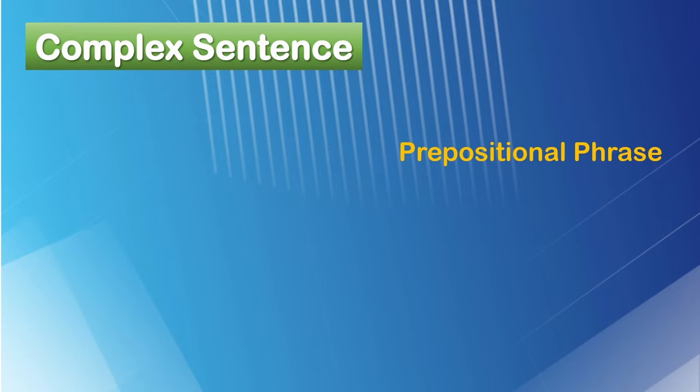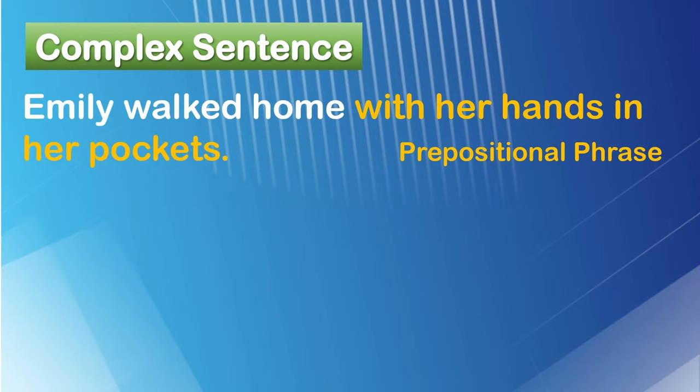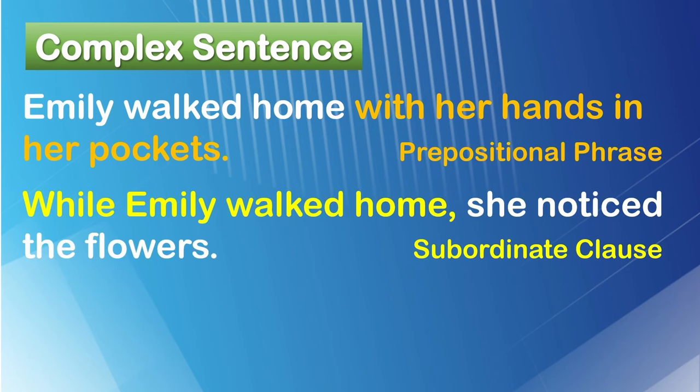So, as a prepositional phrase, we can use the same subject of Emily and say 'Emily walked home with her hands in her pockets.' Let's take a look at a subordinate clause. While Emily walked home, she noticed the flowers.